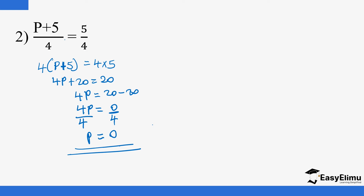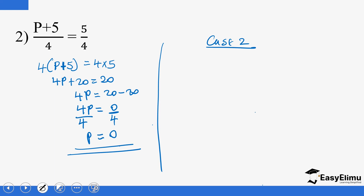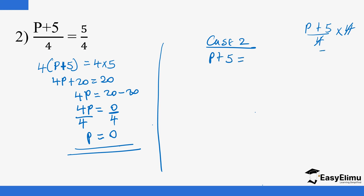Even if you multiplied all through by 4, you would still end up with zero. For example, using alternative method: you have (P plus 5) over 4 multiplied by 4. The fours cancel, giving P plus 5. And 5 over 4 multiplied by 4: the fours cancel, giving 5. So P equals 5 minus 5, which is zero. Either way, you arrive at zero.